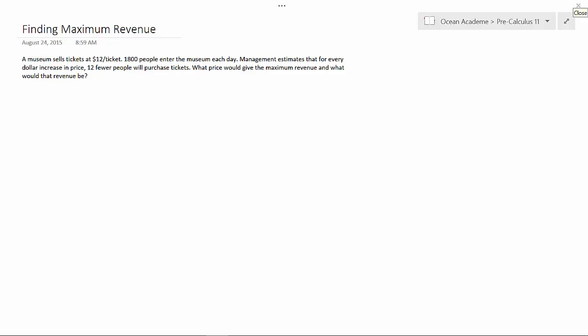Hello and welcome to Ocean Academy Pre-Calculus 11. Finding Maximum Revenue. A museum sells tickets at $12 per ticket. 1,800 people enter the museum each day. Management estimates that for every dollar increase in price, 12 fewer people will purchase tickets. What price would give the maximum revenue and what would that revenue be?